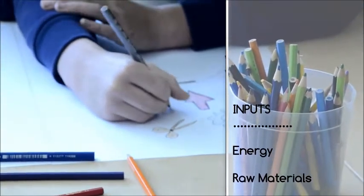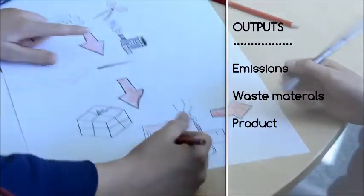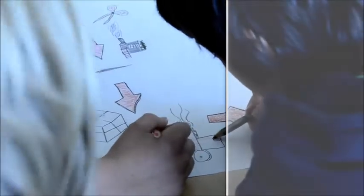Inputs such as energy, raw materials and water are mapped as well as their corresponding outputs such as carbon emissions, waste materials and even the desired product.